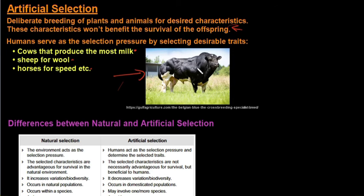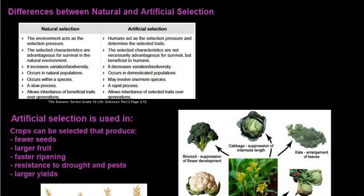And I can promise you these Belgian blues did not look like this a few years ago. Then the differences between natural and artificial selection. This table I got from the answer series, part 2 specifically, it just summarizes it very nicely. So if you want some extra information or some additional activities that you can practice, I do recommend getting those books, part 1 and part 2 for life sciences. They are very helpful.